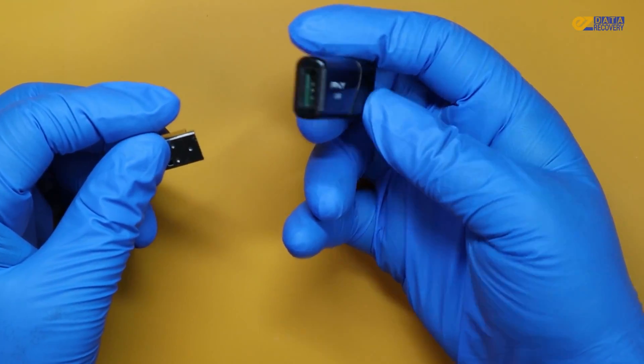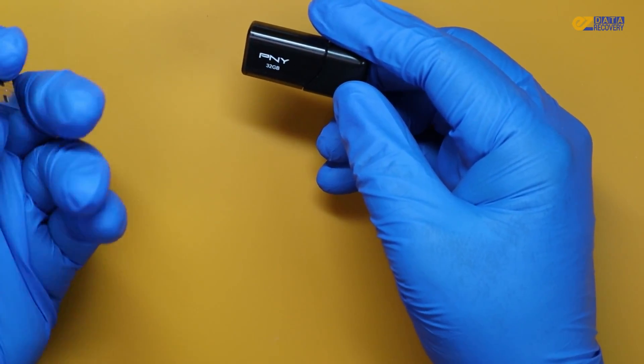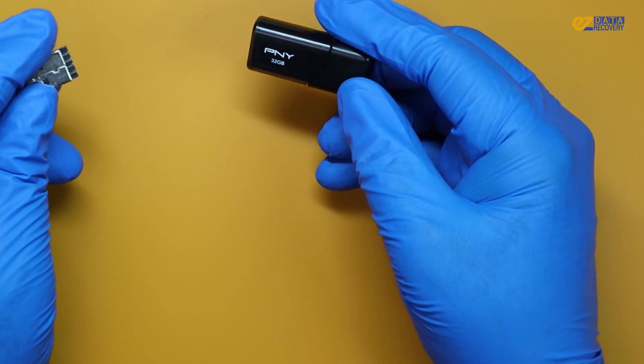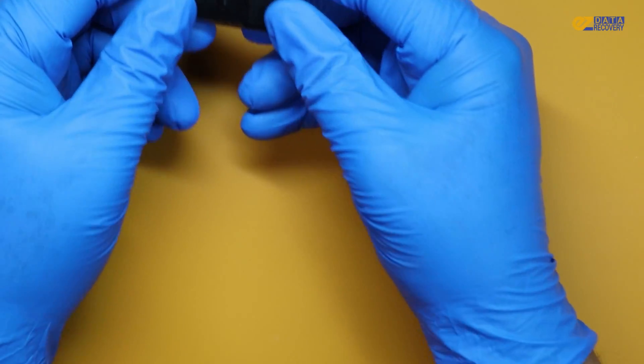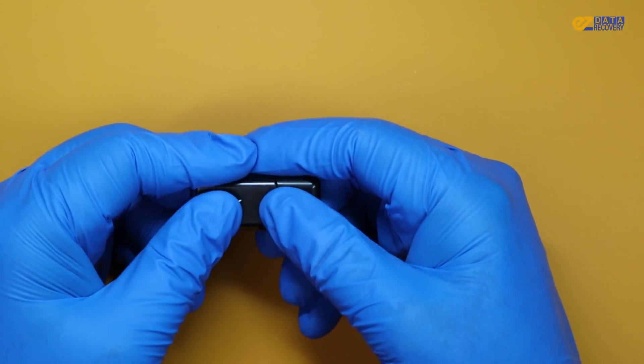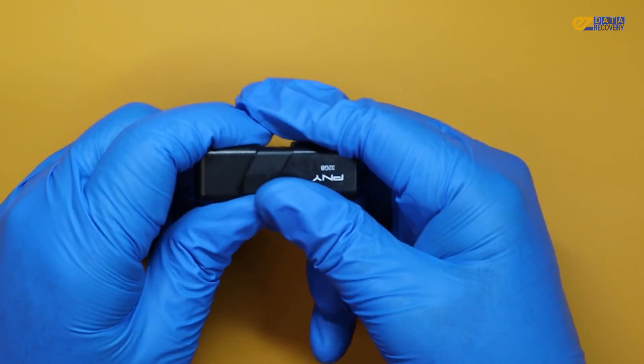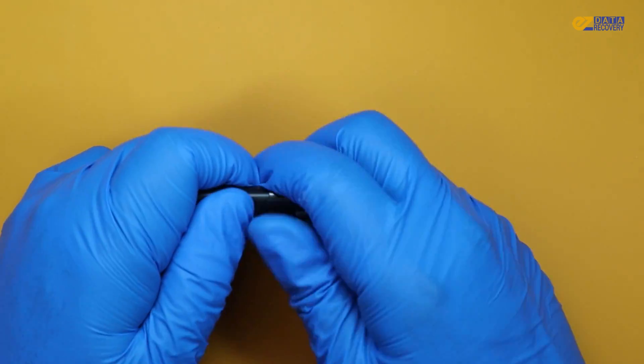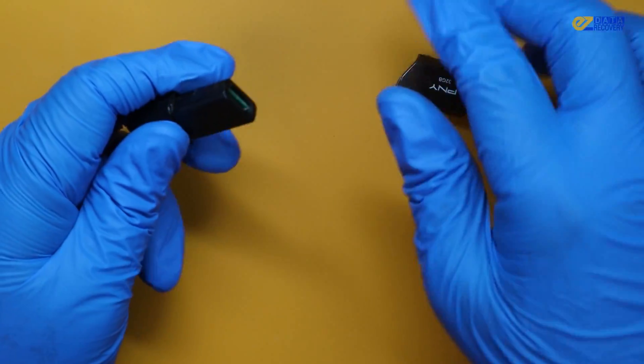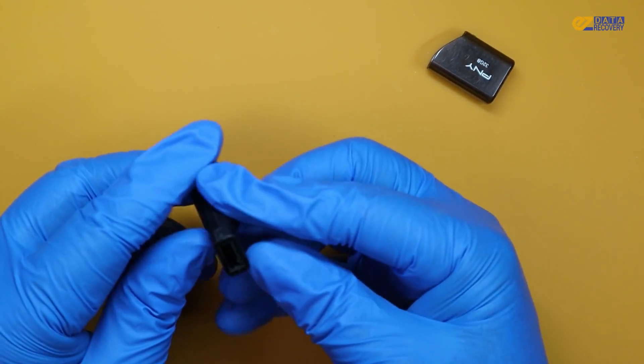So let's go ahead and open the enclosure. You need to be very careful as it is very easy to knock off components off this PCB board. But luckily this PNY isn't that hard to remove the enclosure. So we just have to remove this cover right here. Just snaps off with a little bit of force. And there we go.